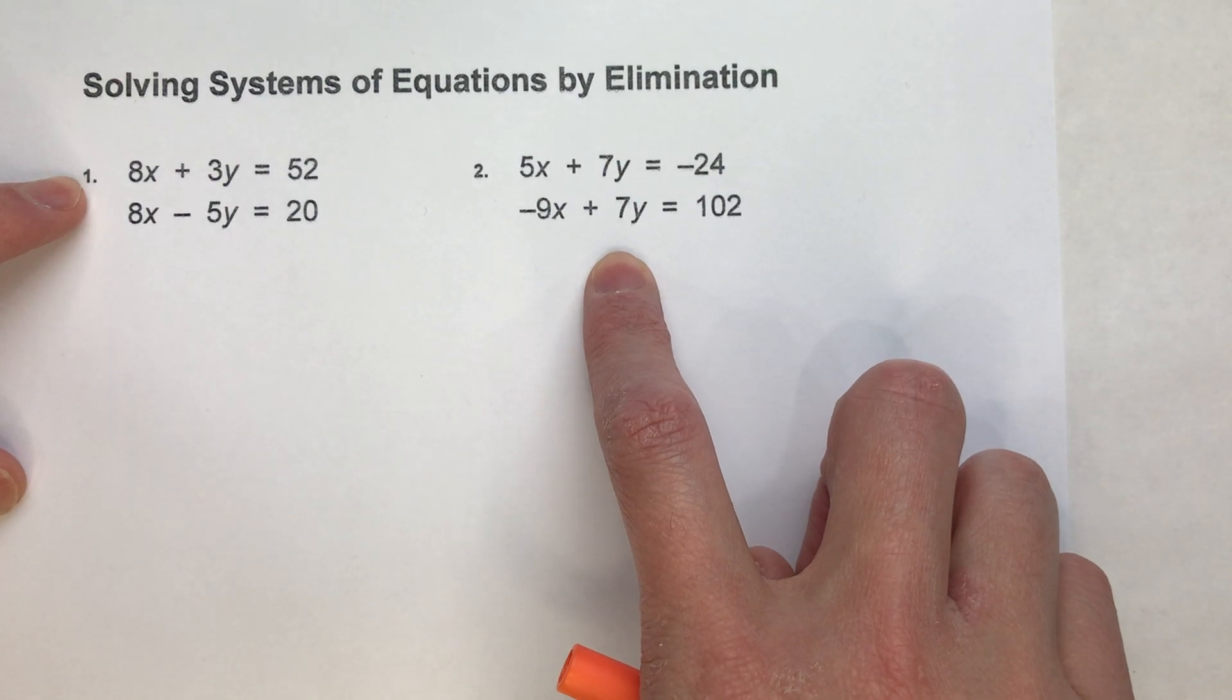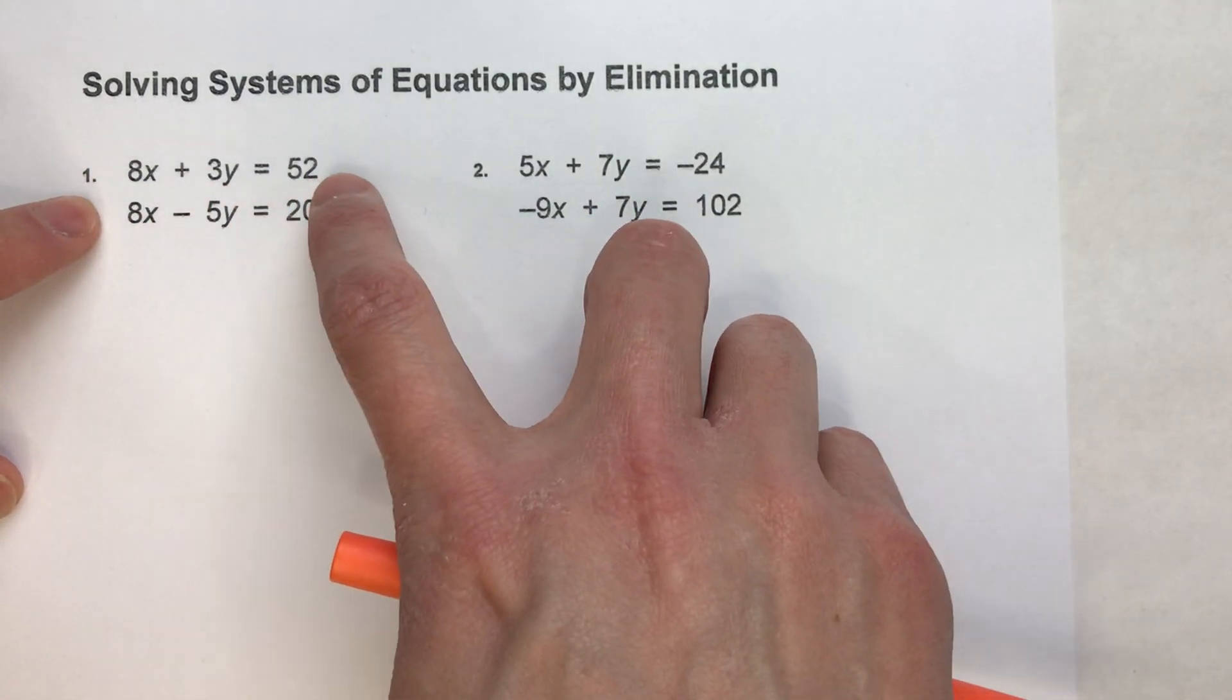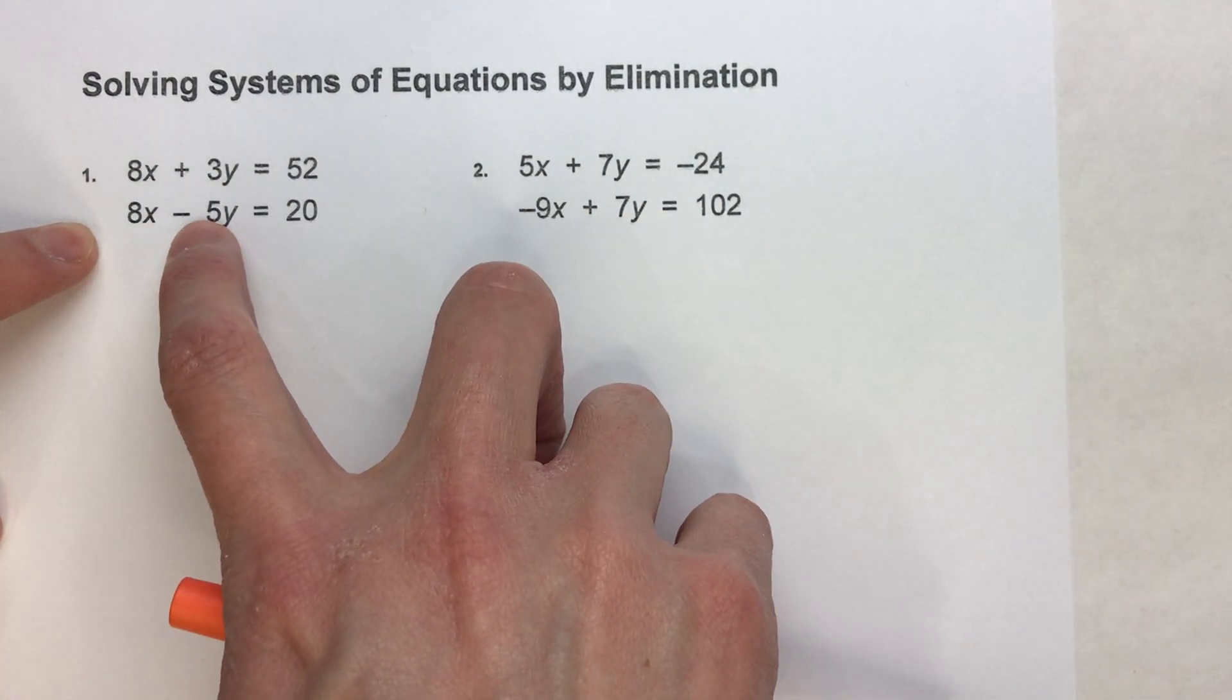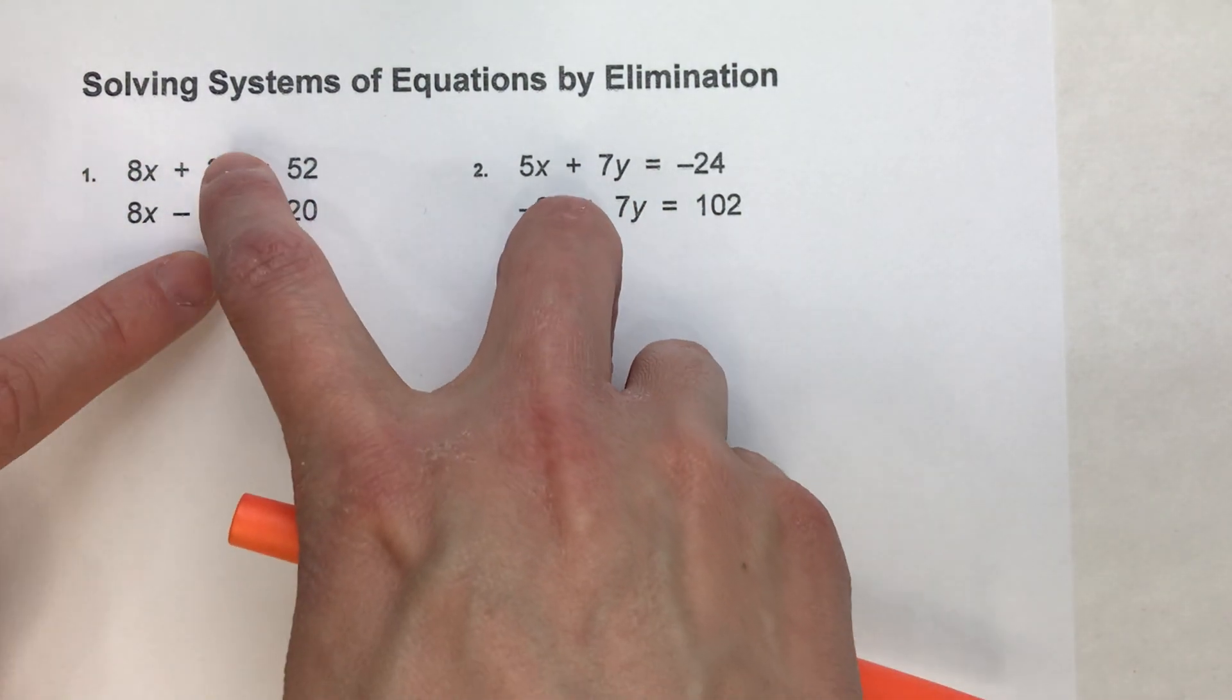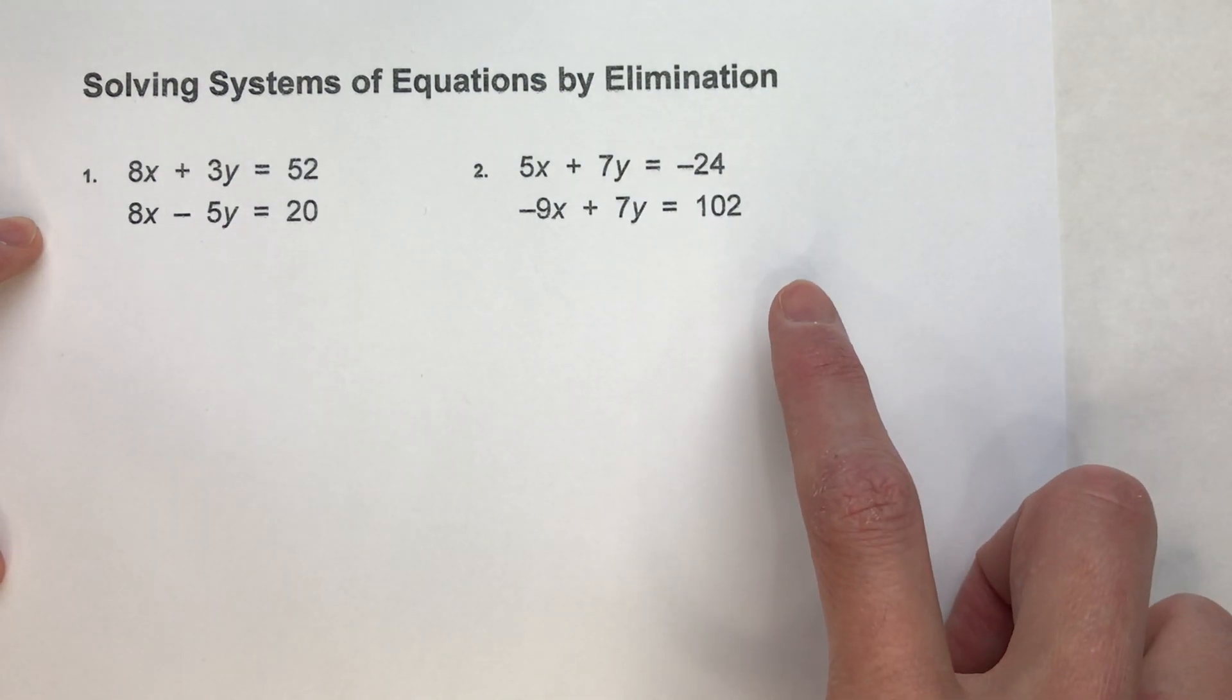Today, this situation is not like that. Notice we've got 8x + 3y = 52, 8x - 5y = 20. And if I add these together, I'll have 16x's and -2y's, and that doesn't eliminate any of my variables.